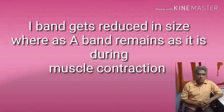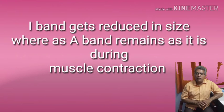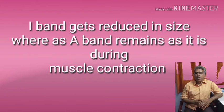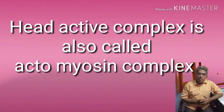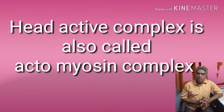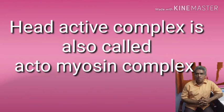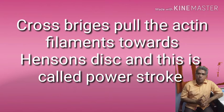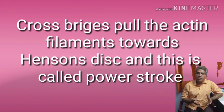When calcium ions are released, troponin and tropomyosin are dragged away from the active sites of the actin, facilitating the binding of the myosin head with the active site. The myosin head attaches to the actin forming the actomyosin complex — a cross bridge. The myosin filaments then drag the actin filaments attached to the Z line vigorously towards Hansen's disk. This is called the power stroke and it requires ATP.